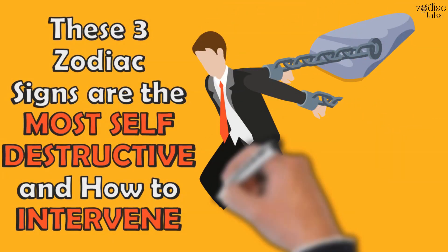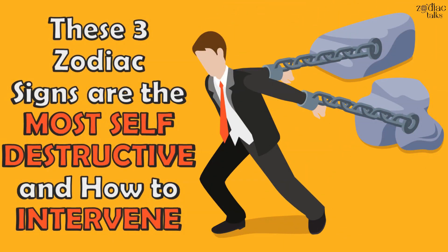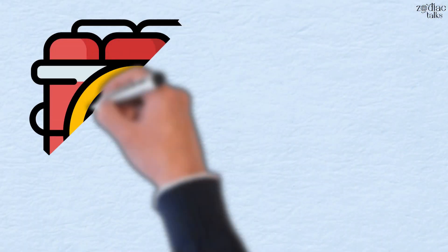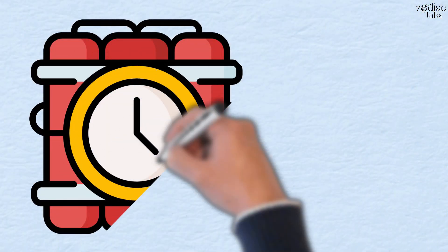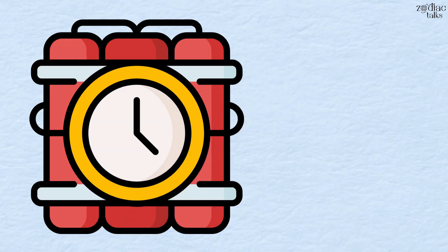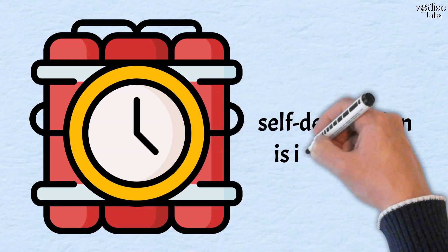These three zodiac signs are the most self-destructive and how to intervene. Some people are ticking time bombs on the course for self-destruction. It doesn't matter how well things might be going, self-destruction is inevitable.